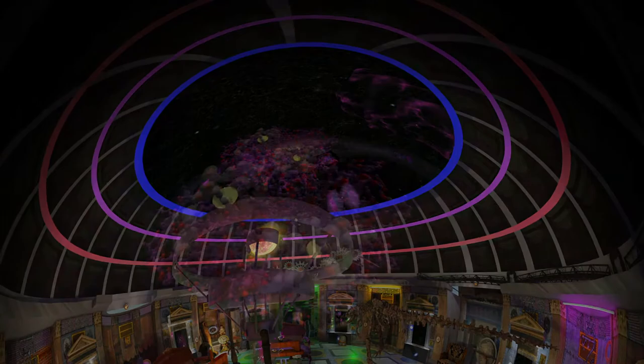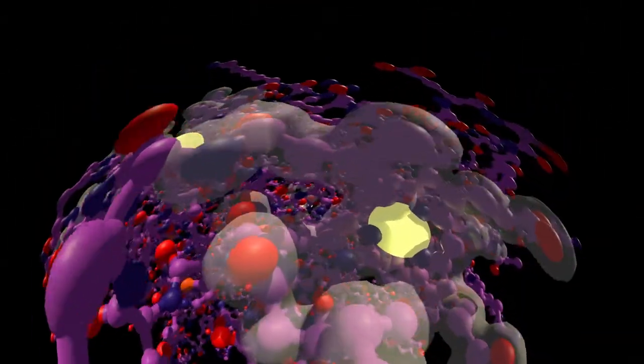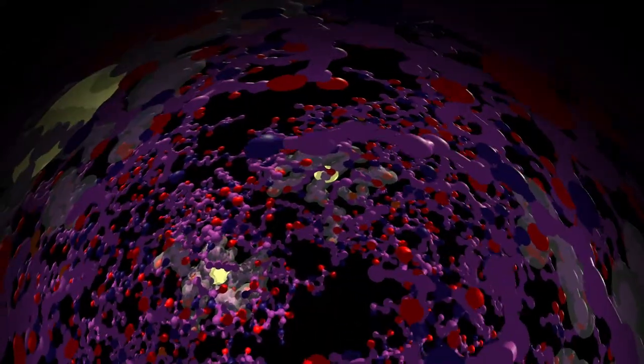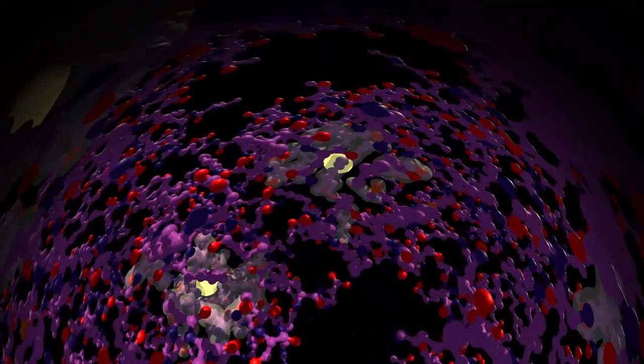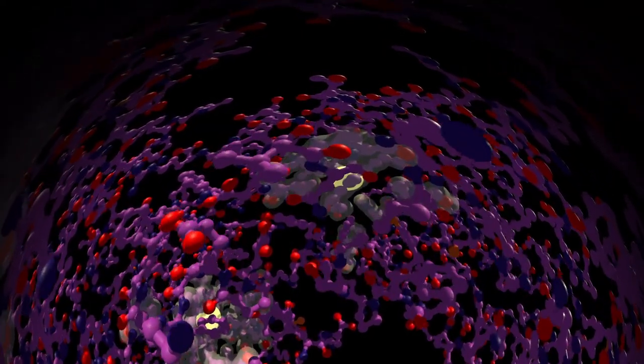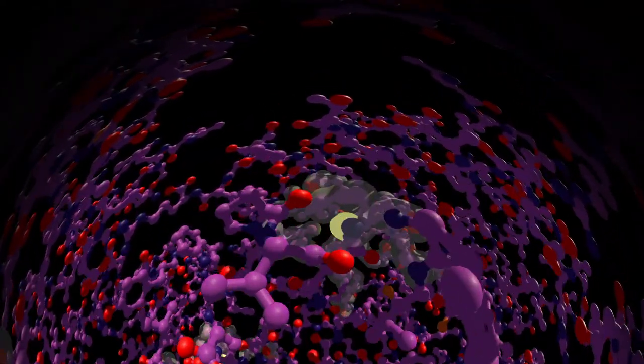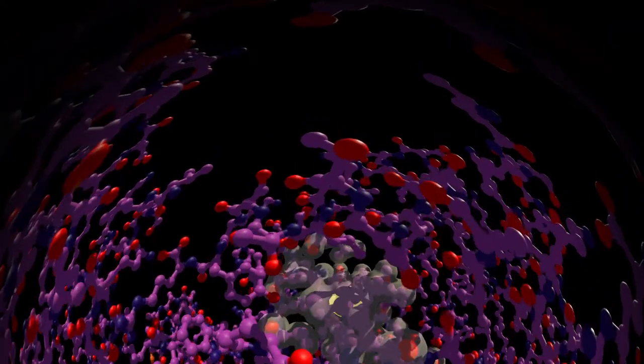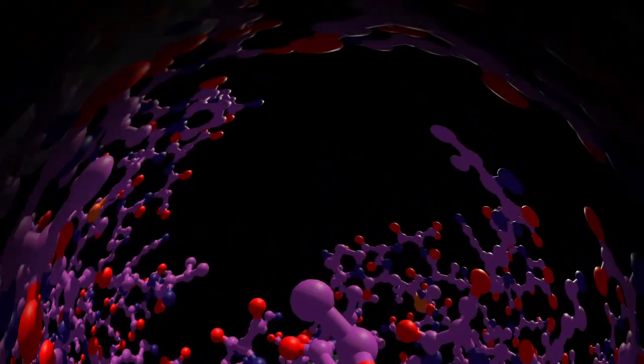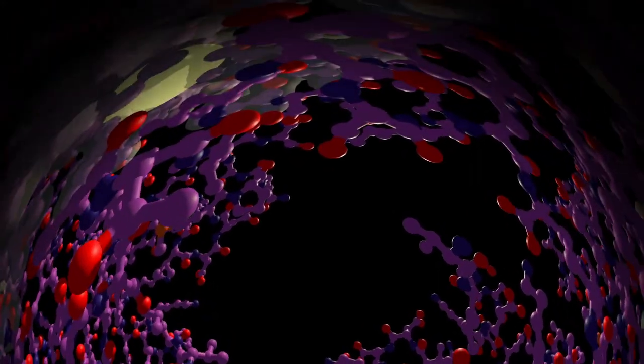In your blood, you carry atoms from the birth of the solar system. The hemoglobin molecules that give your blood its red color contain iron atoms. These iron atoms were created in a supernova explosion and scattered through interstellar space long before your Earth was born.